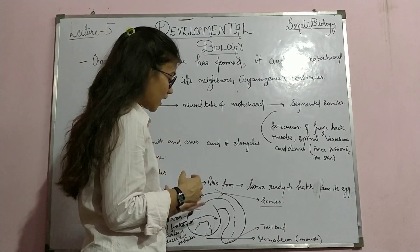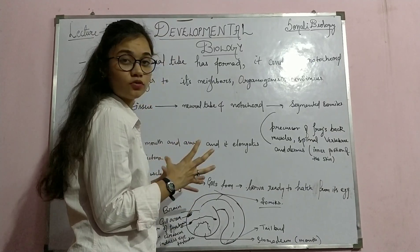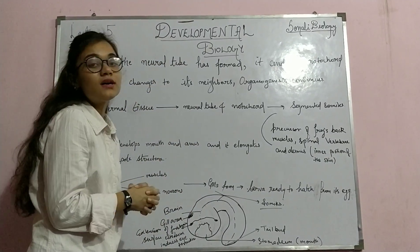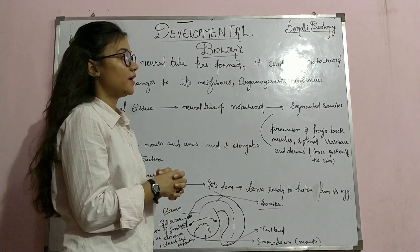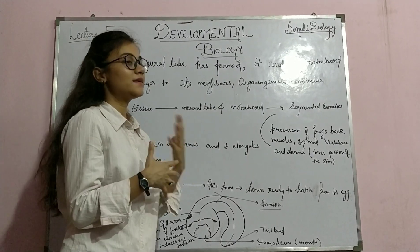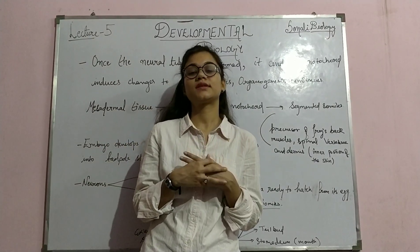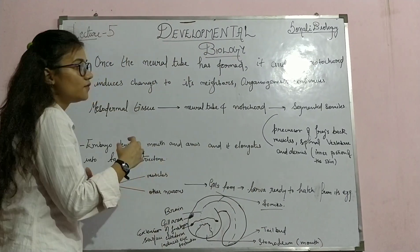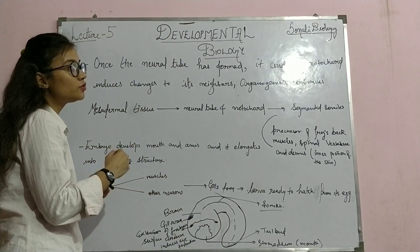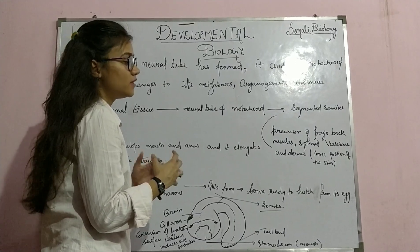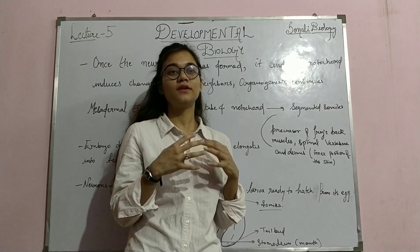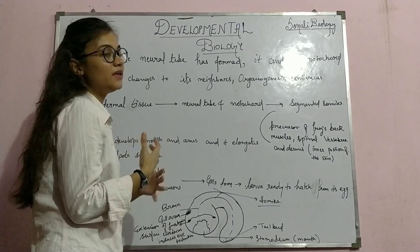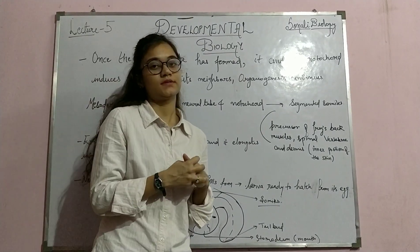The larva is now ready to feed itself and can survive in the external environment. In my next class, I will discuss morphogenesis — how this larval stage will continue to develop, reach adulthood, and become eligible for mating.